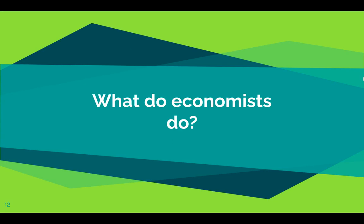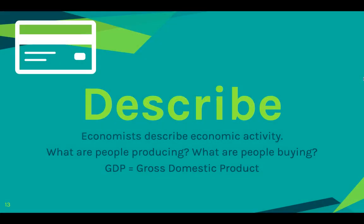The next question is: what do economists do? We have the idea of economics where we're analyzing supply and demand, but what exactly are economists doing? First of all, they describe economic activity — what are people producing and what are people buying? This can help lead the economy. If we figure out what people are buying and producing, we know where there's a need for maybe a new product or a new manufacturer. GDP, or gross domestic product, also fits in here. GDP is essentially a calculation of all the different things a nation creates or produces within one calendar year, used as a measure of economic growth.